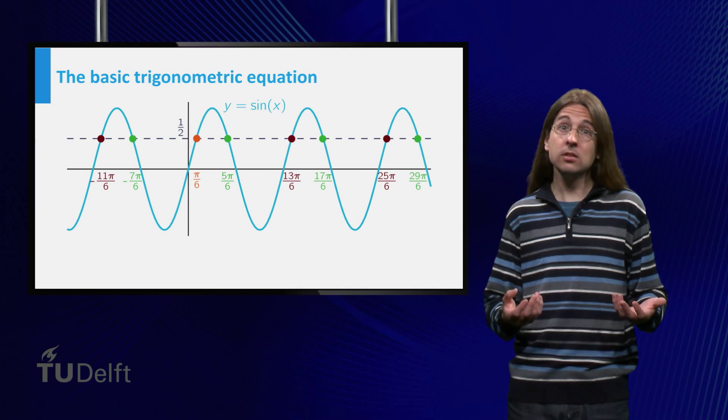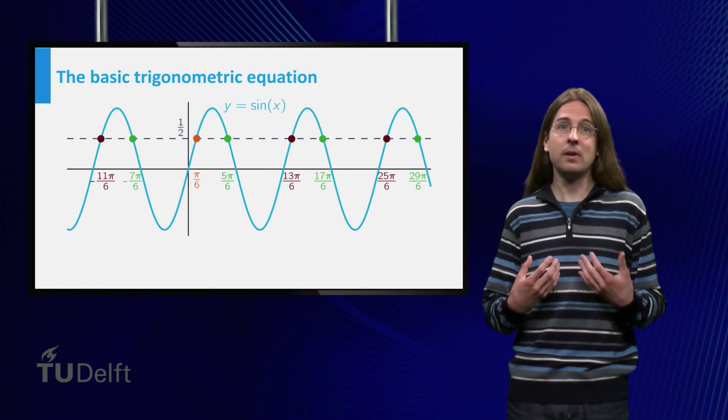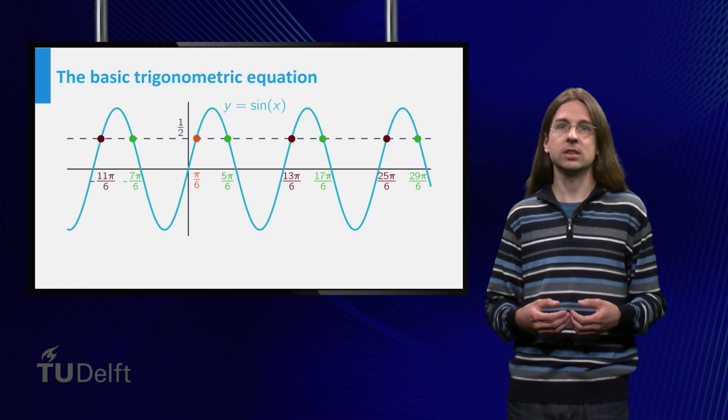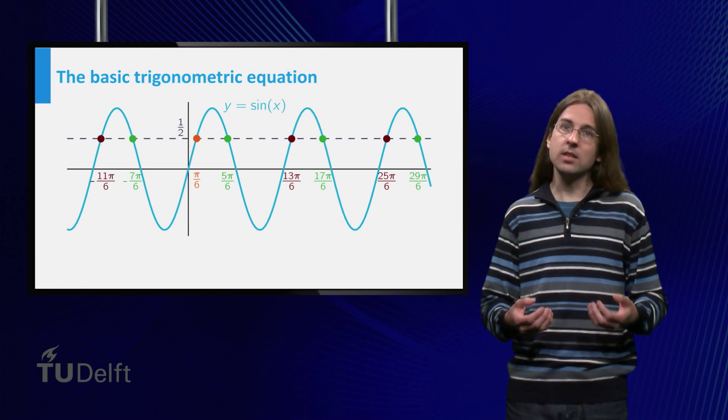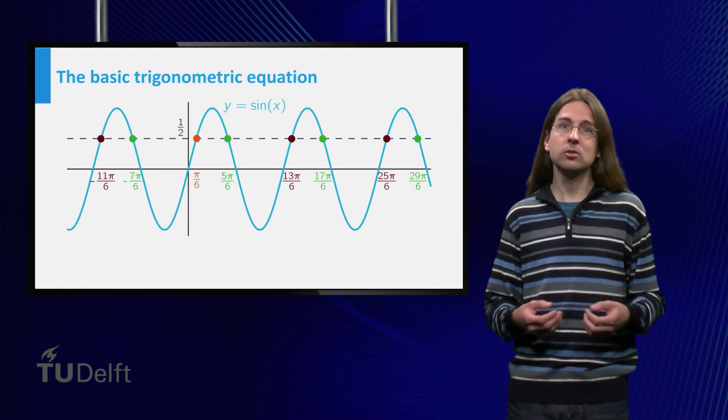The other green solutions can be subsequently found by adding multiples of 2π to 5π/6. You can see in the graph that we have now found all solutions.